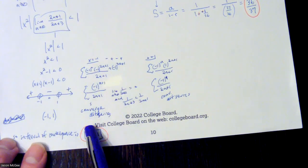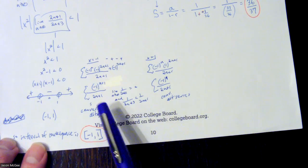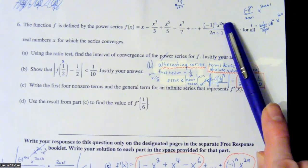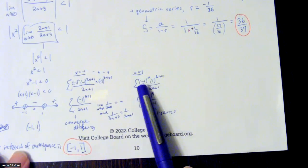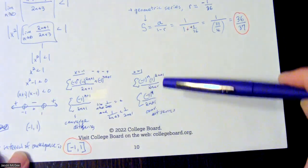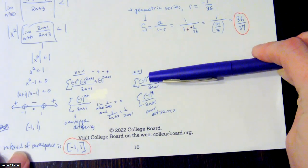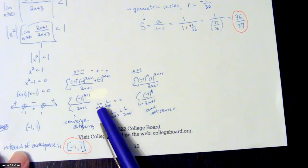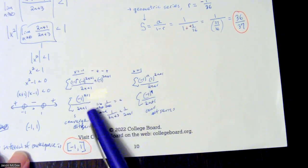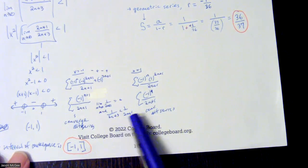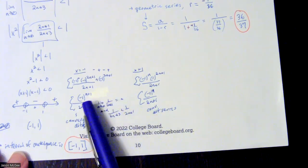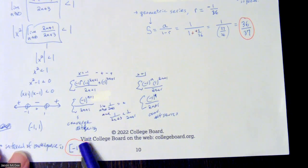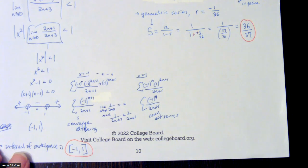Since it converges, we include x equals negative one with a bracket. For x equals one, we replace with positive one to the 2n+1, which is just 1, so the negative one to the n and the 2n+1 carry down. We do identical work — that's another convergent alternating series. Both endpoints converge, so both parentheses turn into brackets. Make sure you're checking your endpoints and practicing that because we've seen it a bunch.